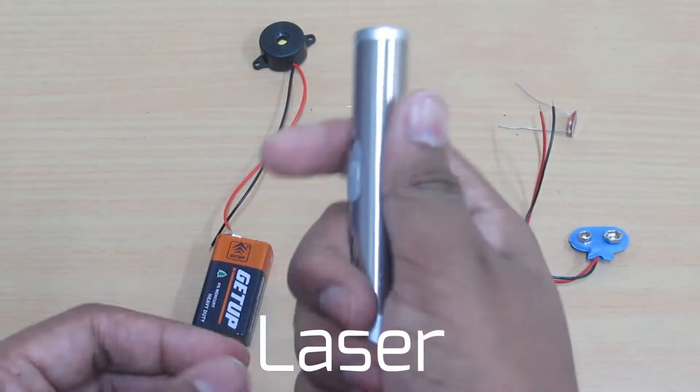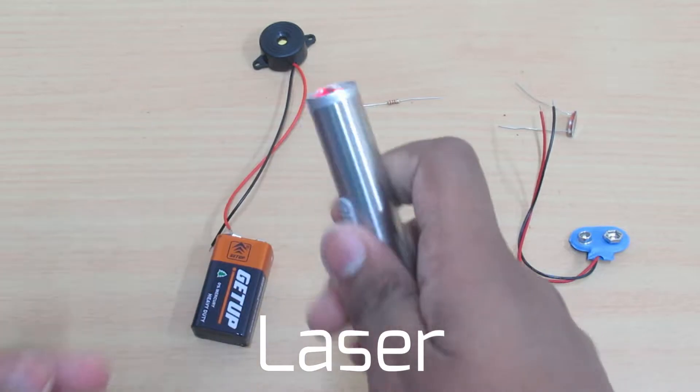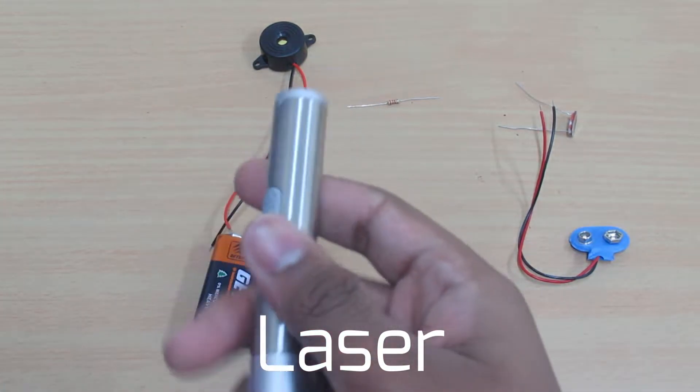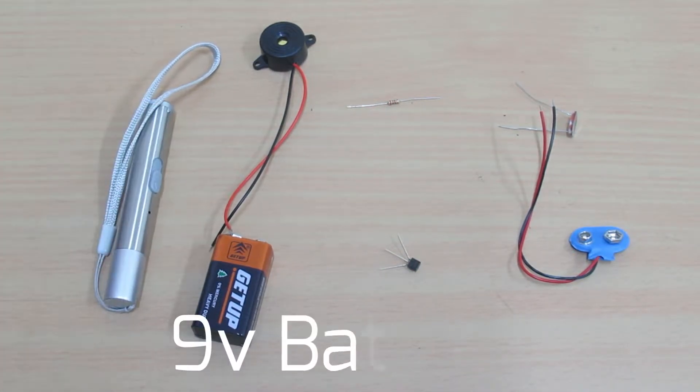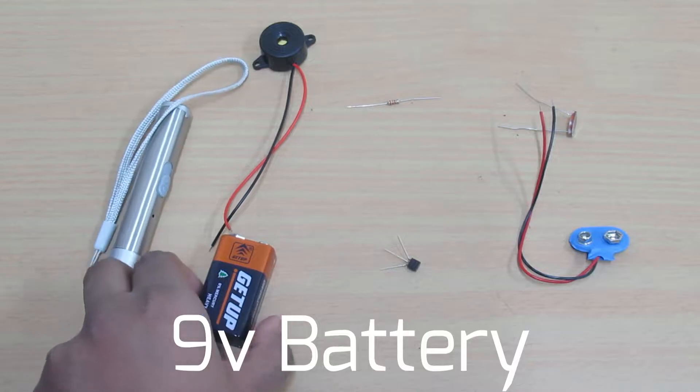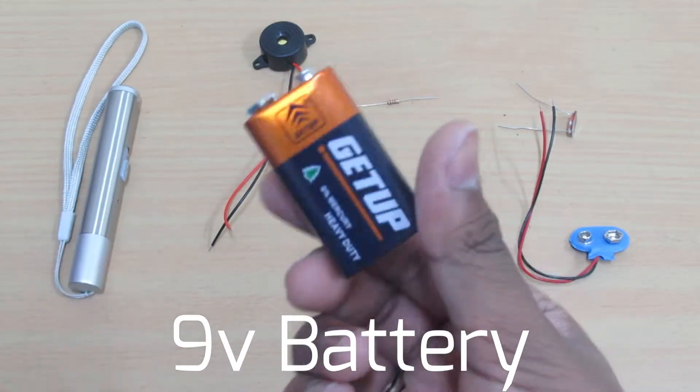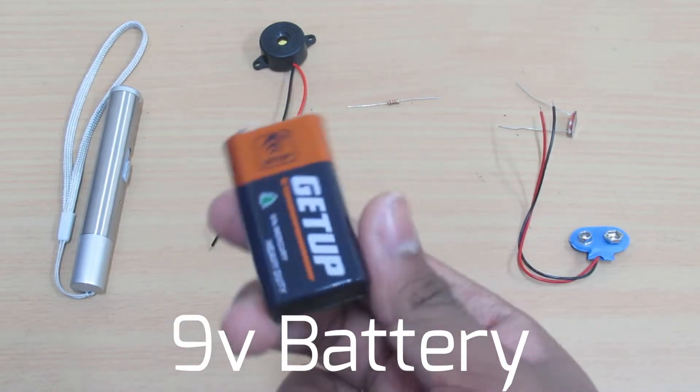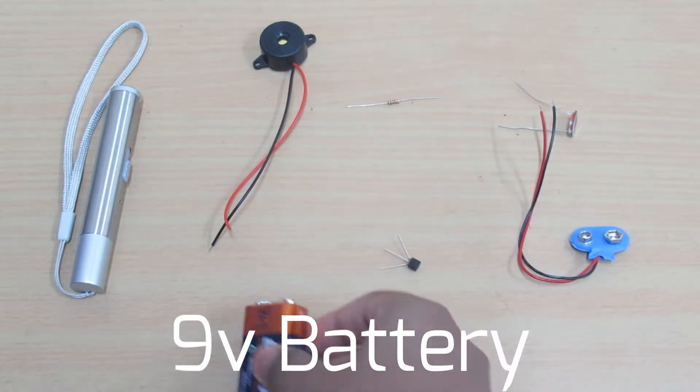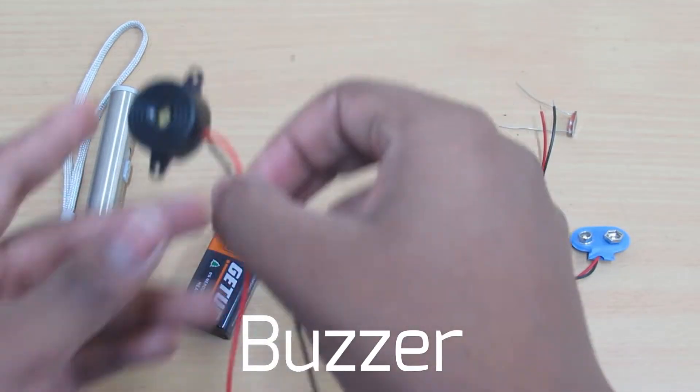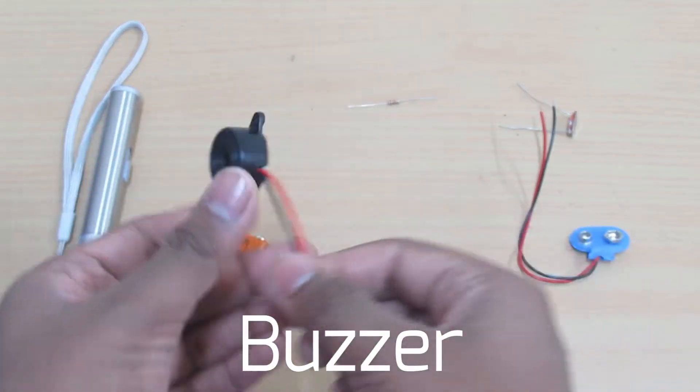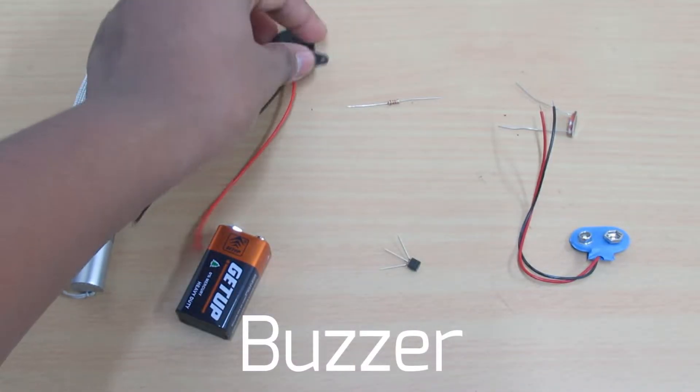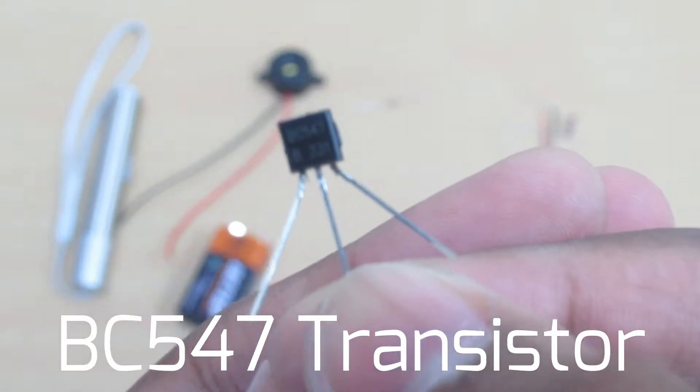To make your laser security alarm, you will need a laser, a 9-volt battery, a buzzer, and a BC547 transistor.